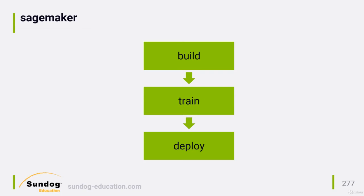And this training can be distributed. AWS will spin up as many machines as you want and train your model in parallel across them. This isn't free, of course — that computer time costs real money.